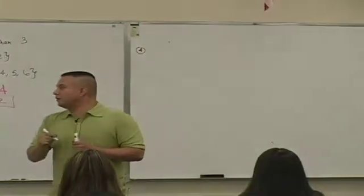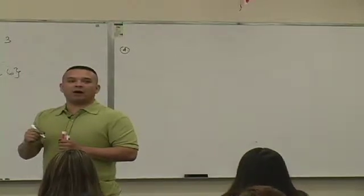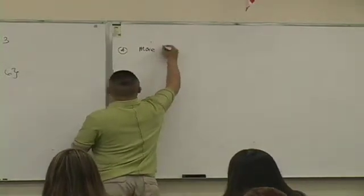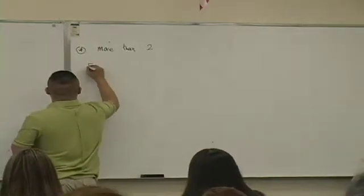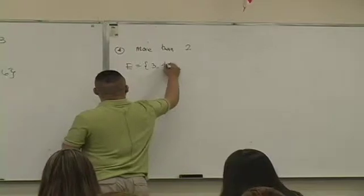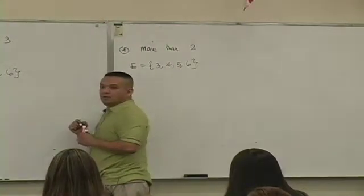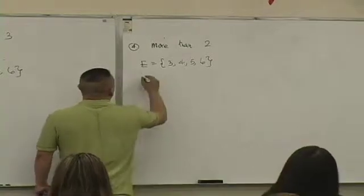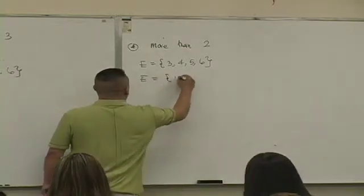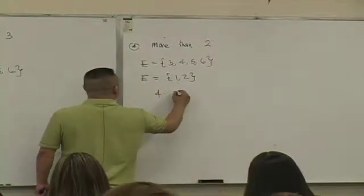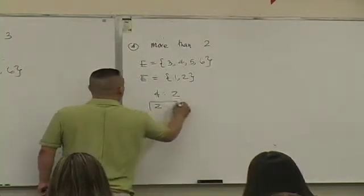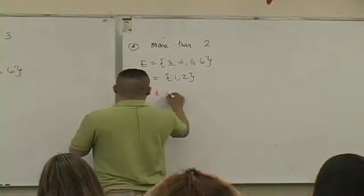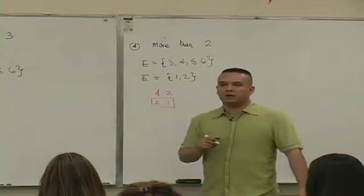Four. Question four. What's four? A number more than two. Which outcomes are more than two? Three, four, five, and six. Is that true? What's the complement of that? One and two. Good. What's the odds for? Four to two, better known as? Two to one.